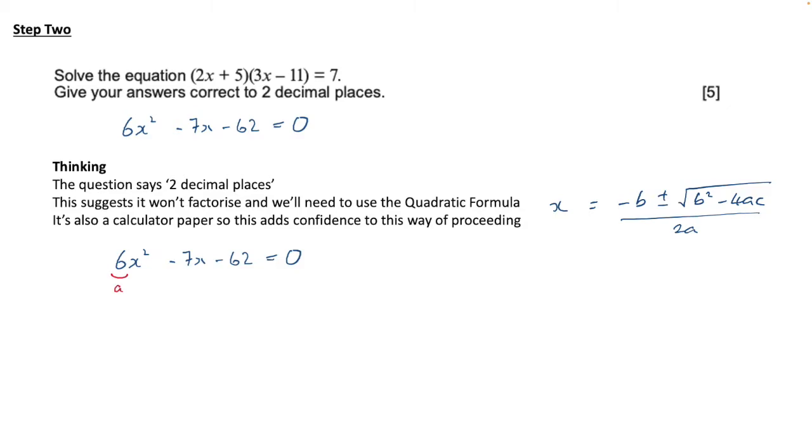So a is the coefficient of x squared, so it's whatever is multiplying x squared, so that's 6 in this case. b is whatever is multiplying x and I've put a bracket there to show you must remember to include the minus otherwise of course it's going to go wrong. And for c that's the constant but again you must include the minus.